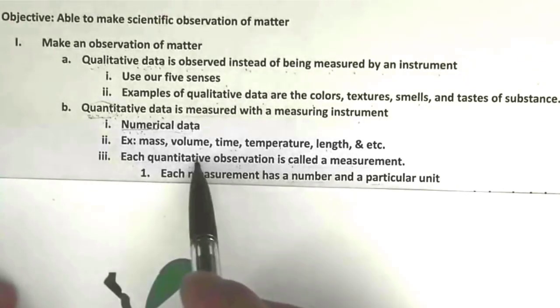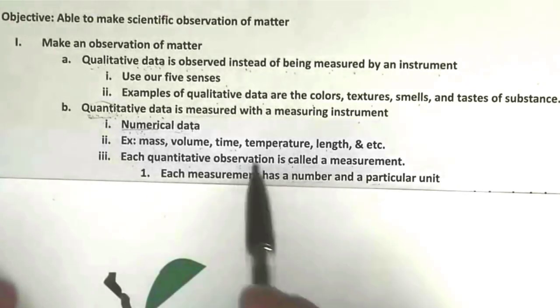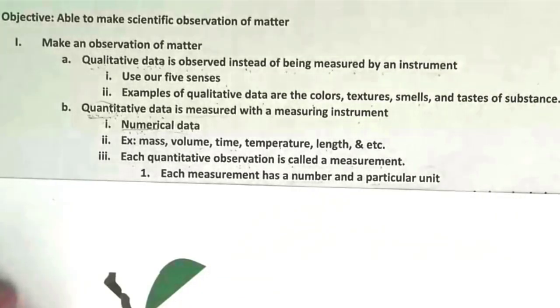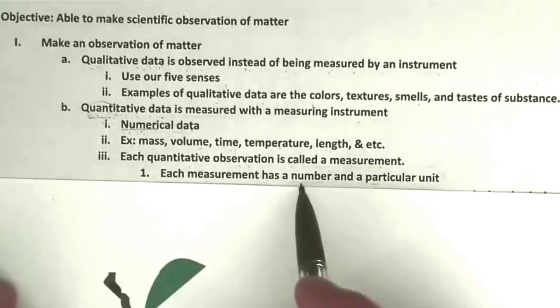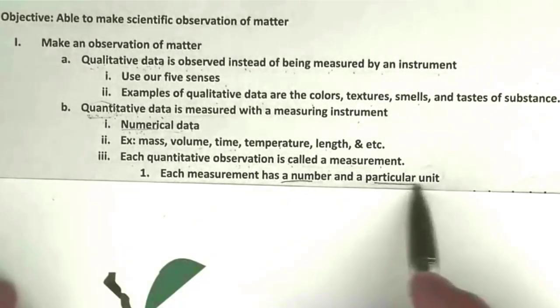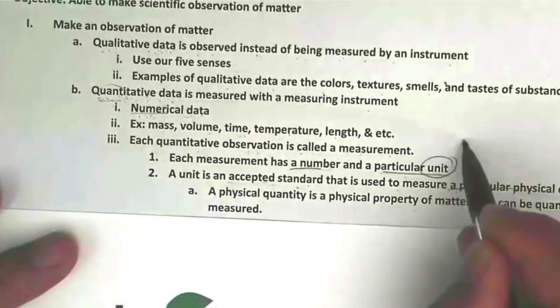Each quantitative observation or data is called a measurement. So the word measurement describes a quantitative data. And each measurement has two parts, a number and a particular unit. What is a unit?